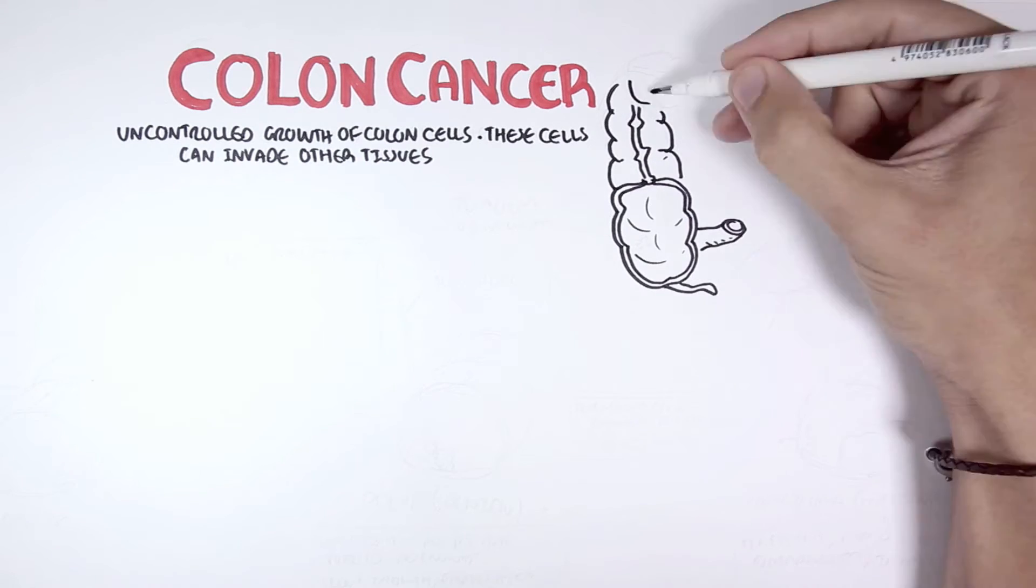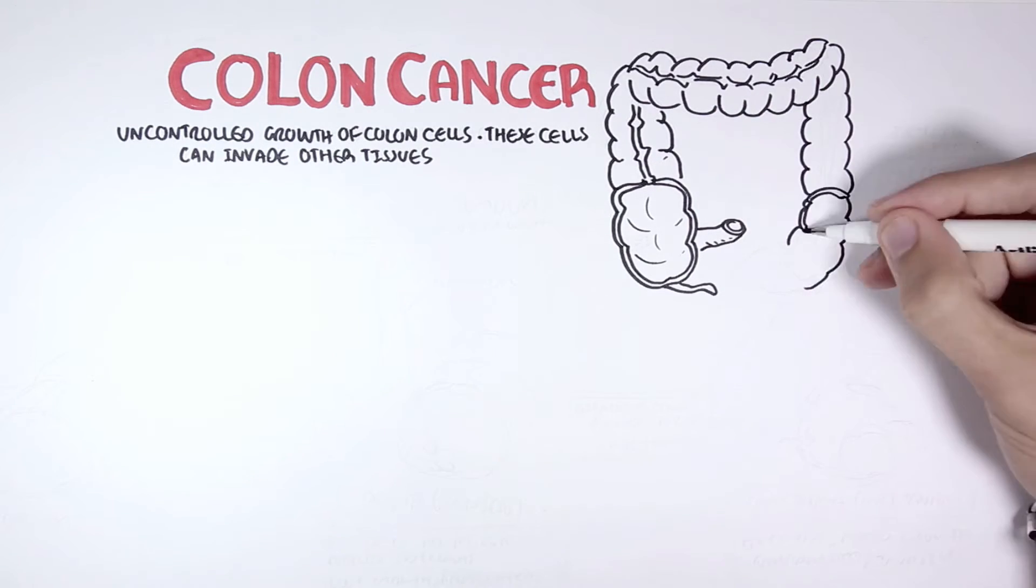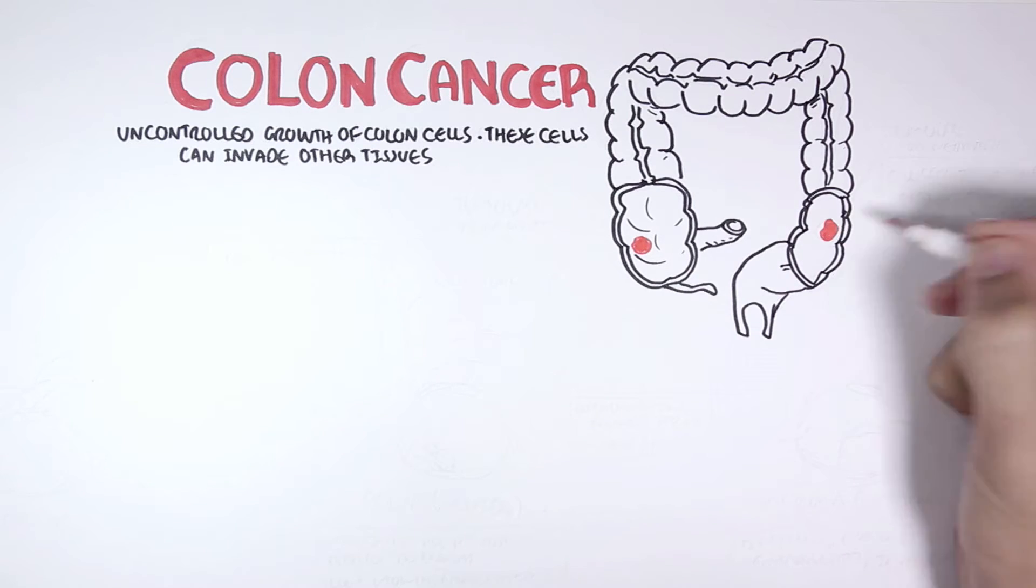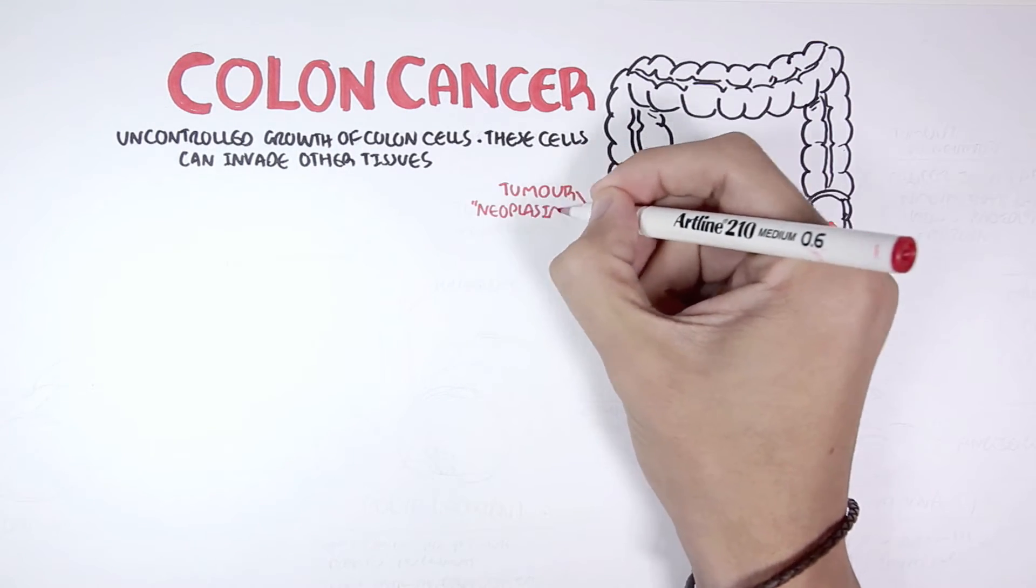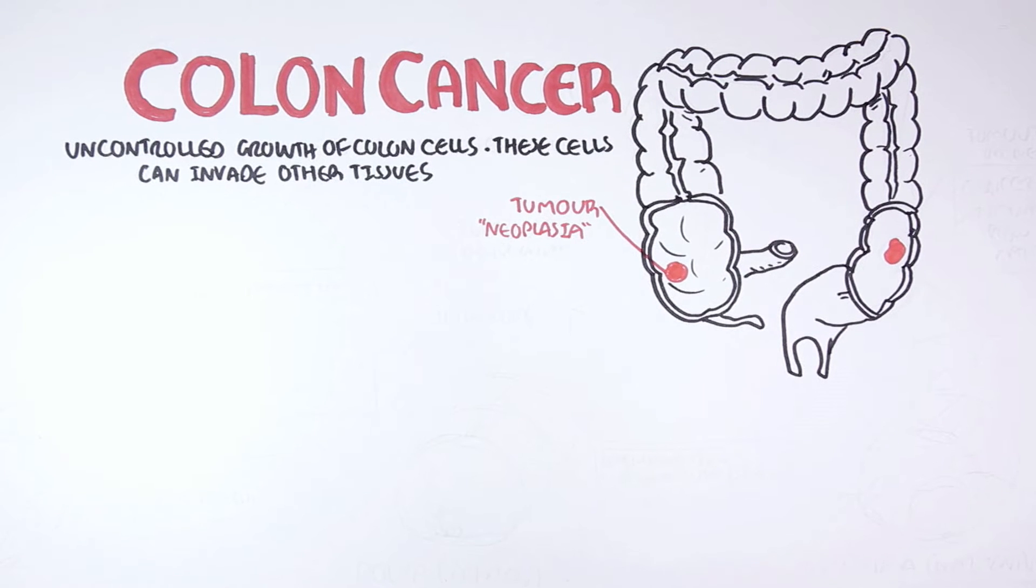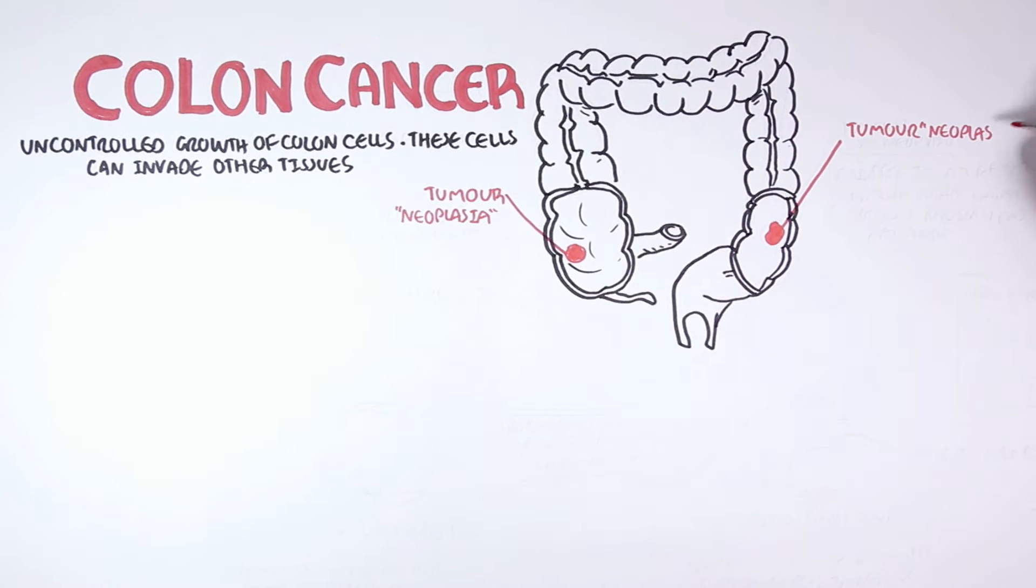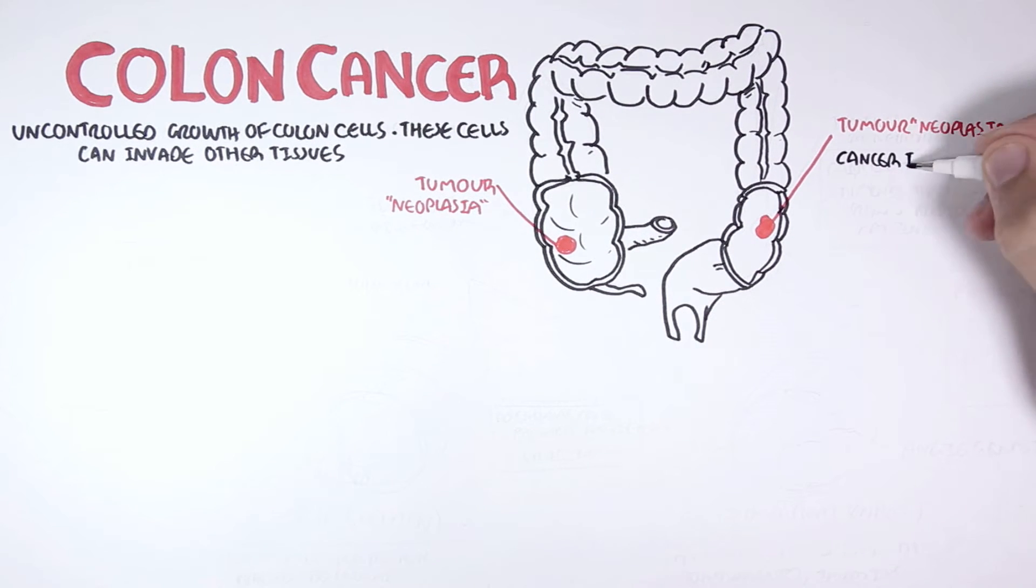Let us look at an example. Here we have a colon. These red mushy looking things are tumors. Tumors are abnormal growths. Neoplasia is another word that is used interchangeably with tumor. Neoplasia essentially means new growth. Now cancer is a type of tumor that usually grows rapidly and is malignant.